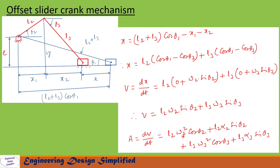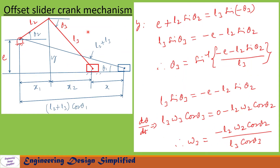Here, omega2 is the angular velocity of the crank and alpha2 is the angular acceleration of the crank. Similarly, omega3 is the angular velocity of the coupler and alpha3 is the angular acceleration of the coupler. Now let us derive equations to find the unknowns — that is theta3, omega3, and alpha3. From the diagram, the vertical component y can be written as e + l2·sin(theta2) = l3·sin(−theta3).